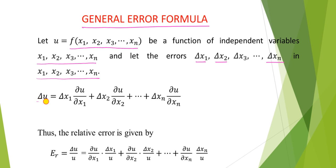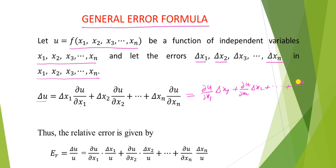Then delta u is equal to delta x1 times del u by del x1, plus delta x2 times del u by del x2, up to delta xn times del u by del xn. This is also written as del u by del x1 into delta x1, plus del u by del x2 into delta x2, plus up to del u by del xn into delta xn.